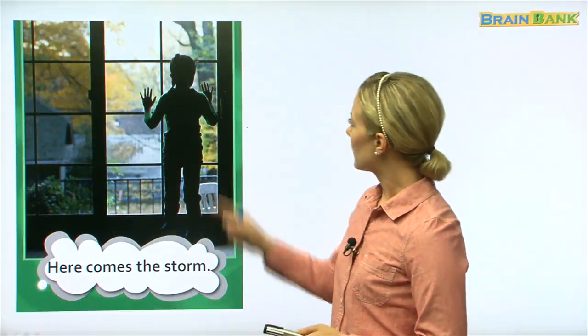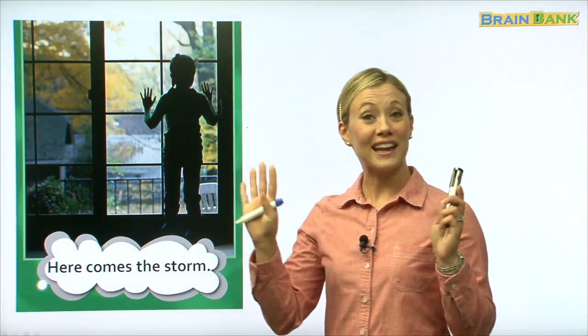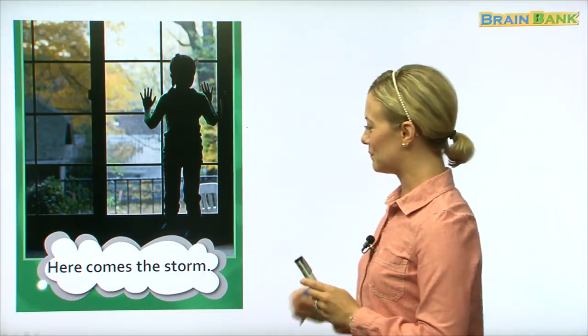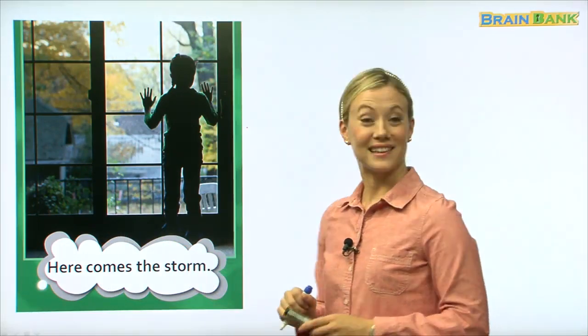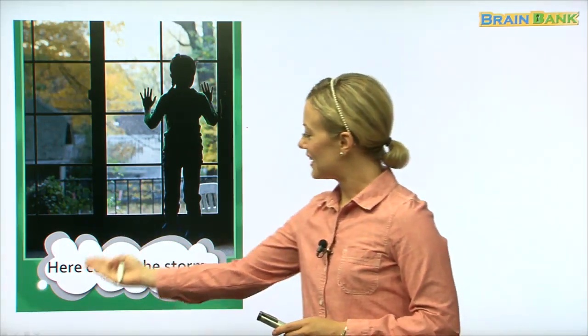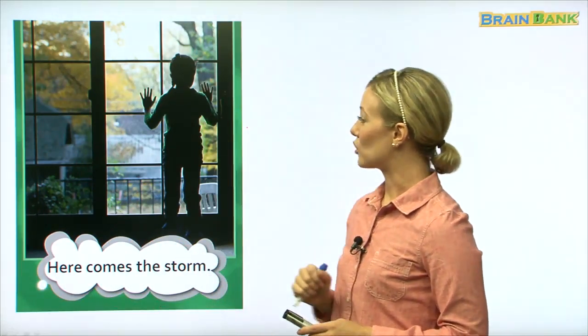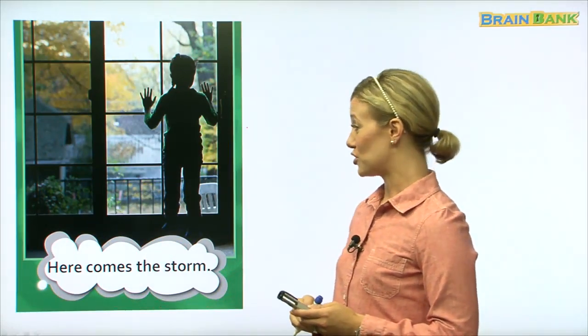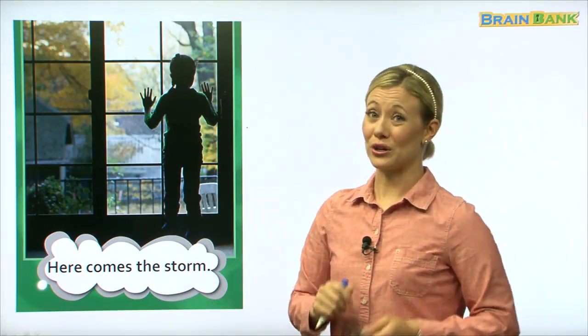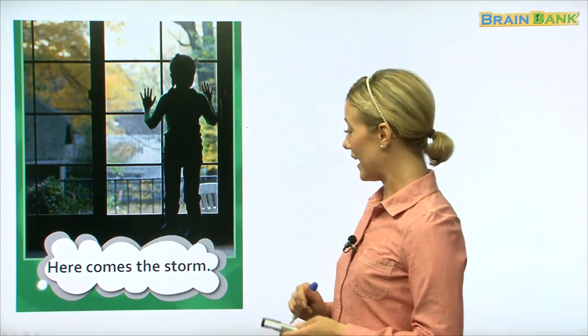So, here we have a little girl, and she's looking out the window at the storm. Here comes the storm. Let's read it all together. Here comes the storm. The little girl is waiting for the storm to arrive. Most children want to stay indoors when a storm comes. They don't want to go out and play in the rain.